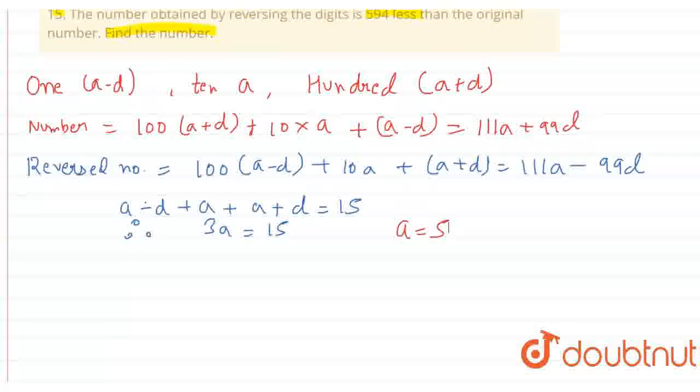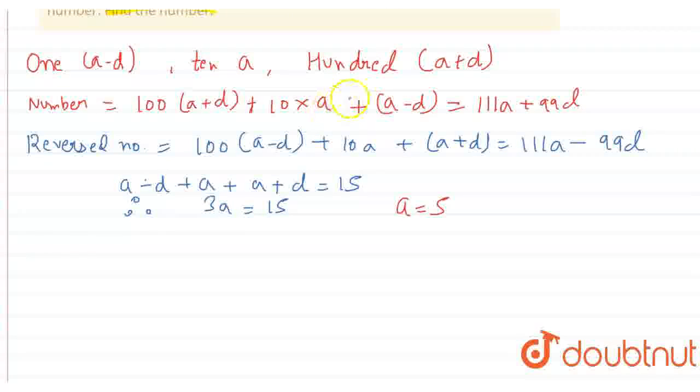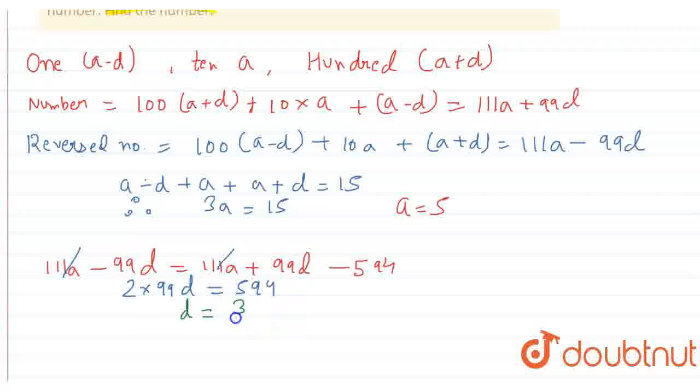By the condition, it's already given in the question that the number obtained from the reverse is 594 less than the original number. So, we are doing that: 111A minus 99D equals to 111A plus 99D minus 594. So while solving this, this is going to cancel and we will get 2 into 99D equals to 594. And after that, we will get D equals to 3.